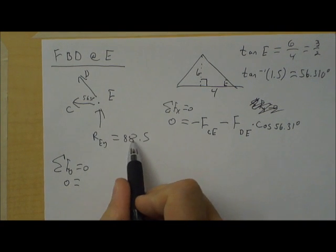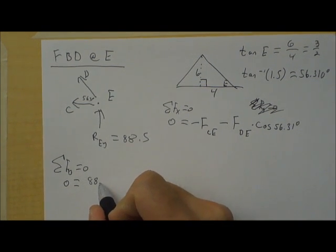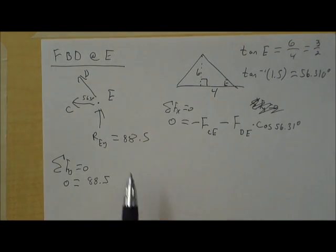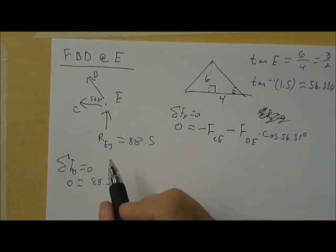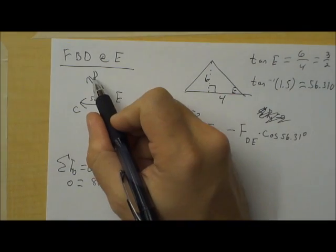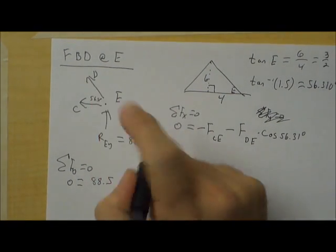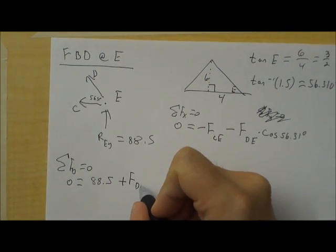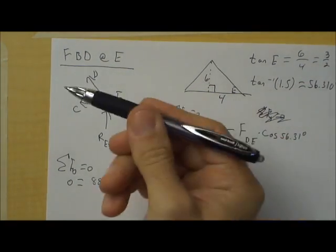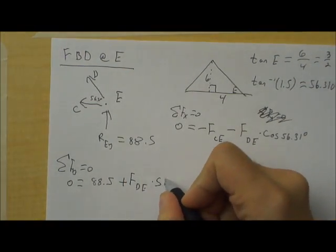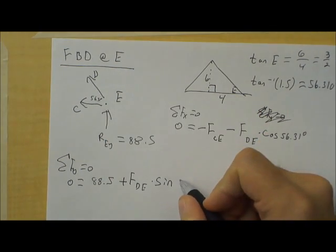I'm going to move this over here. The sum of the forces in the y direction equals 0. So, 0 equals. Okay. Well, we have REY. That's positive 88.5. It's positive because it's going up. And when we're talking about the y direction, up is positive. And then, we also have the force of DE. That's also going partially up. So, that's plus force DE. But we only want the part that's going up, not the part that's going to the left. So, we times that by sine of the angle 56.31.